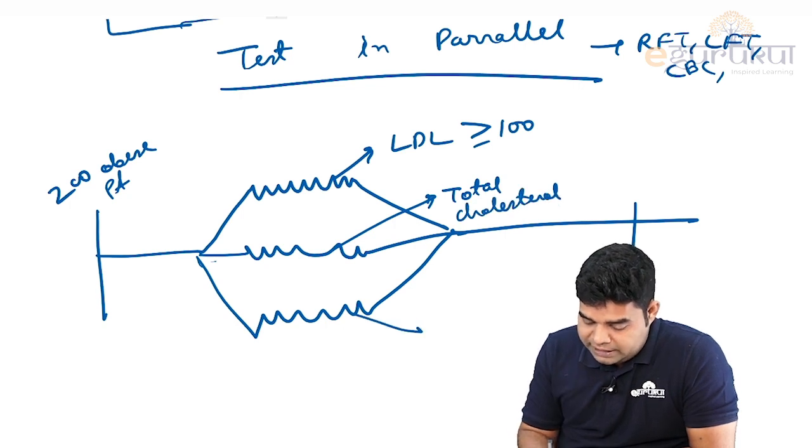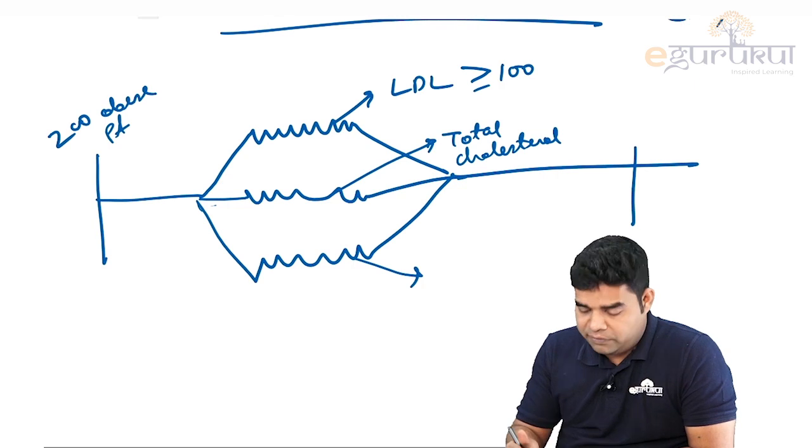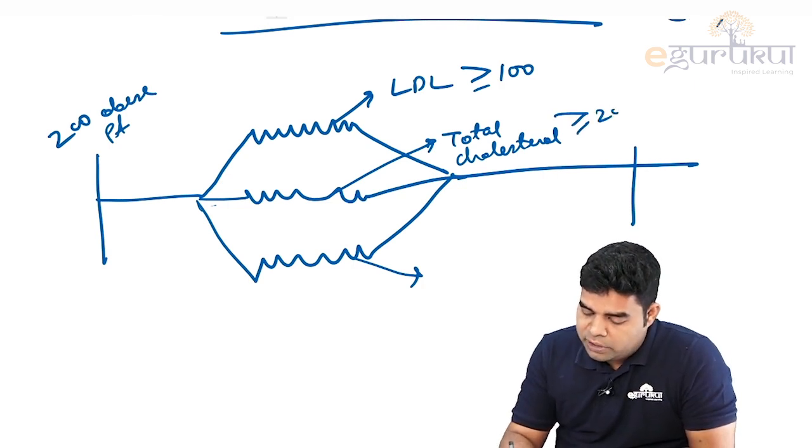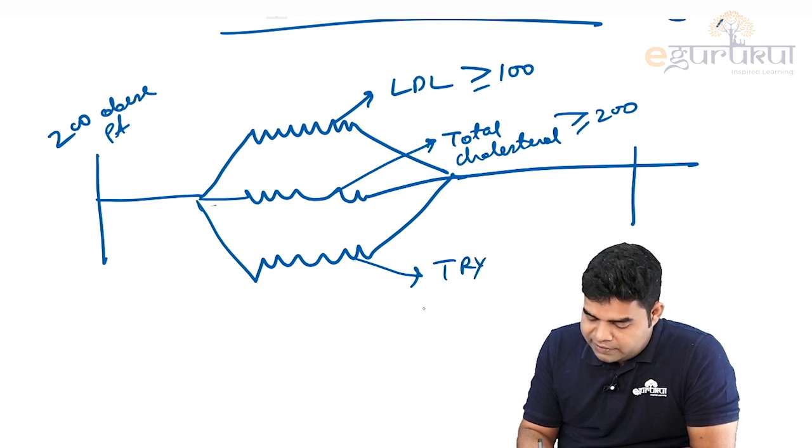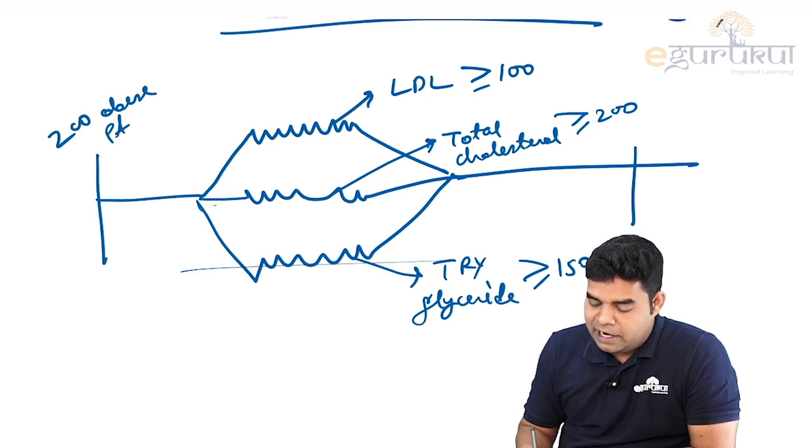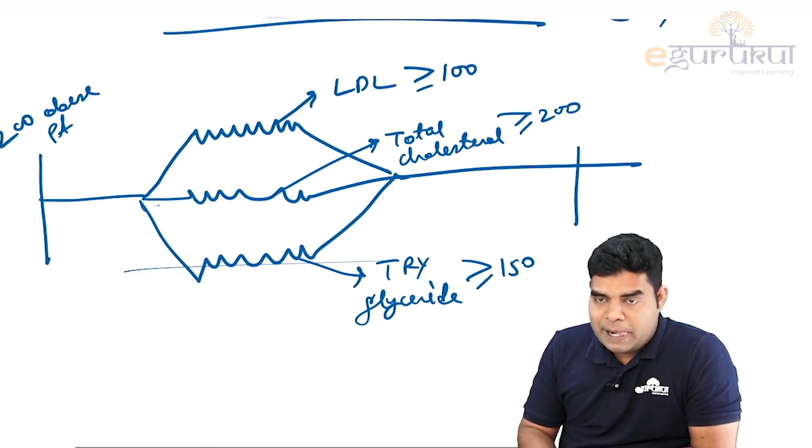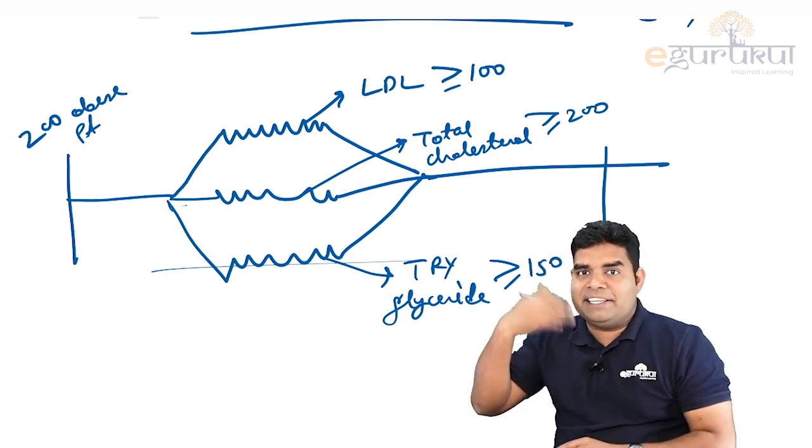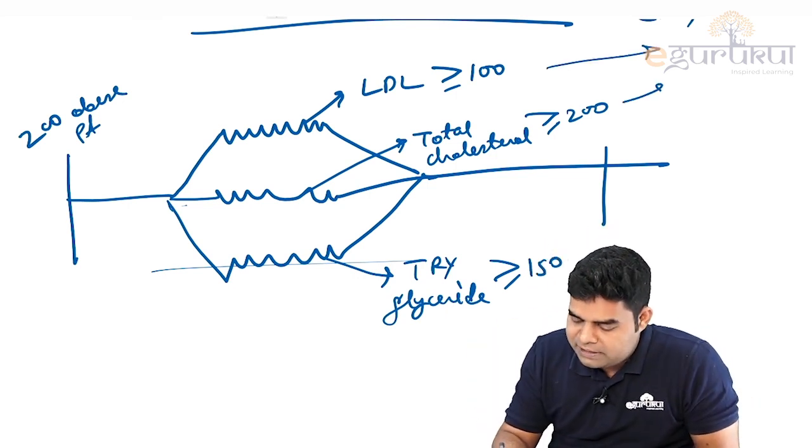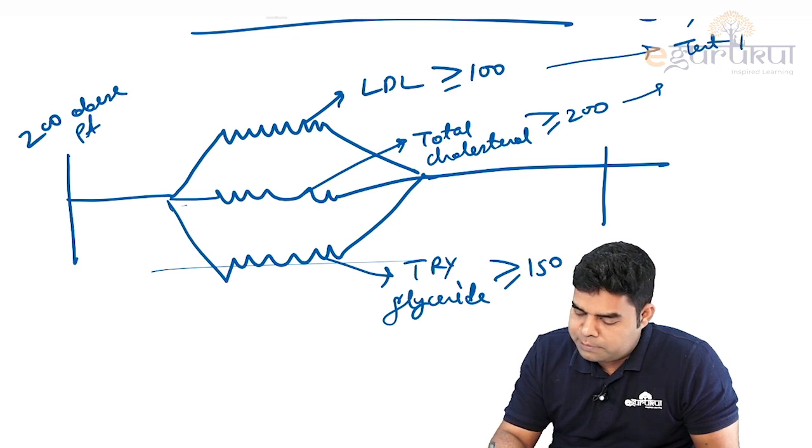Second is total cholesterol—if total cholesterol is more than or equal to 200, the person is hyperlipidemic. Third is triglyceride—if triglyceride is more than or equal to 150, again the person is hyperlipidemic. So if any one of these three is raised, it means that the test is positive.